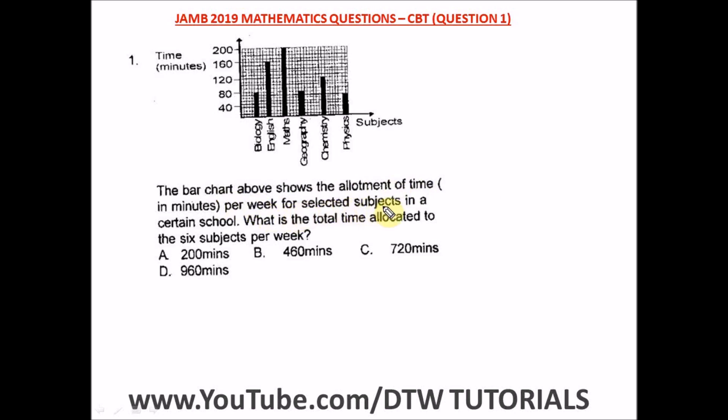Each subject—biology, English, maths, geography, chemistry, physics—has time allocated per week. To answer the question, we have to add up the time each subject took per week to get the total time for all six subjects.